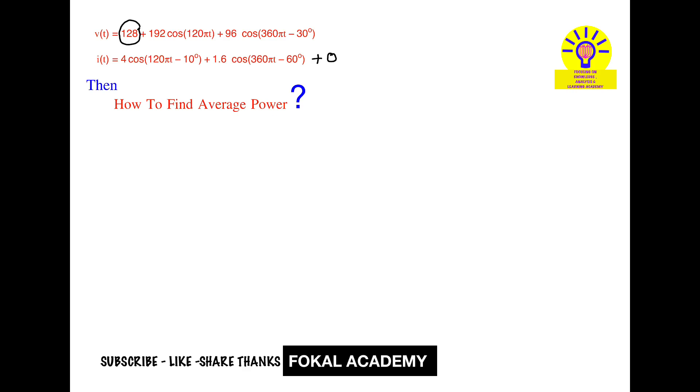first of all, product of constant values, that is DC current and DC voltage corresponding. So that is 128 into zero, plus half of.